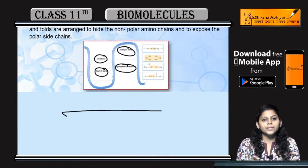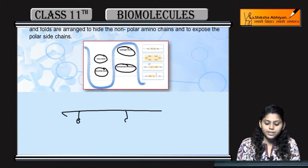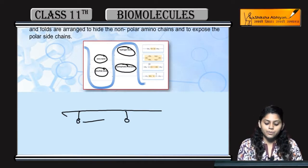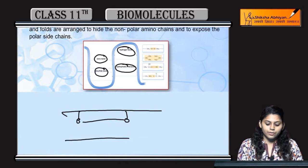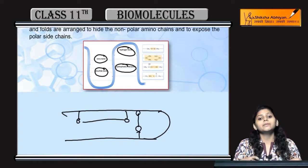You can see — एक polypeptide chain होईगी, and secondary proteins present होंगे. इनके बीच में bonding होगी — ये secondary protein है, ये इसके साथ bond बना रही हैं. इन bonds की वज़ह से,